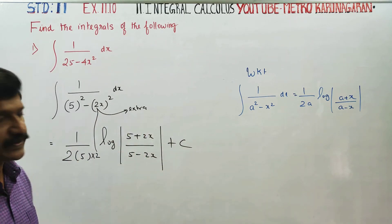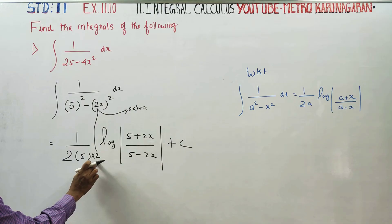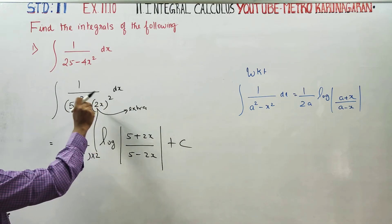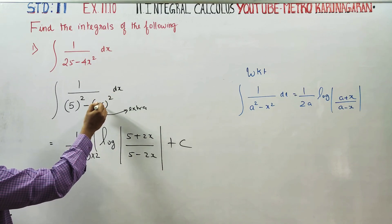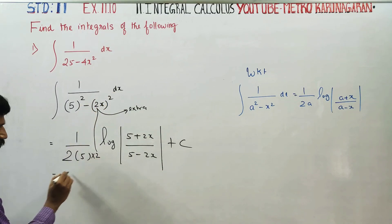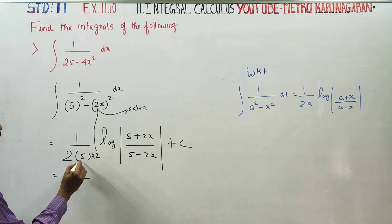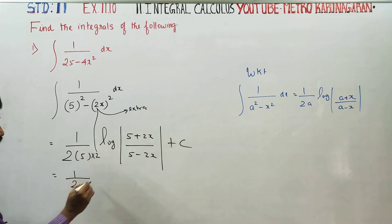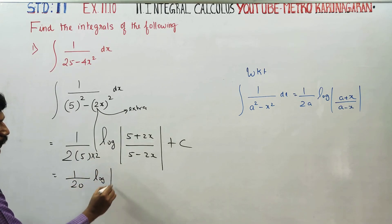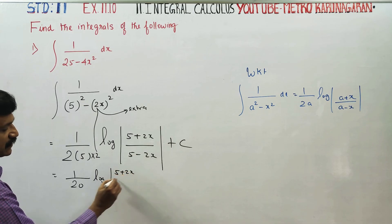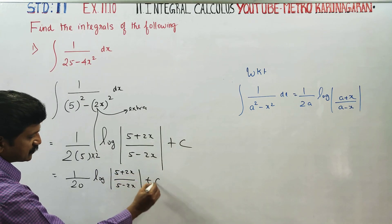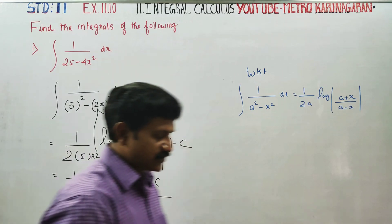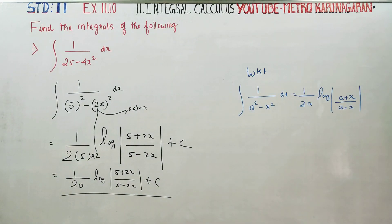The integration is over. The final result is the logarithm of 5 plus 2x by 5 minus 2x, plus C. That is your final result for this integration. Thank you.